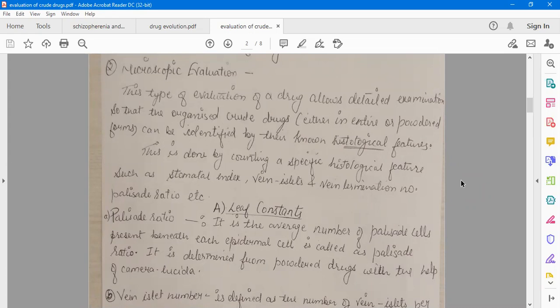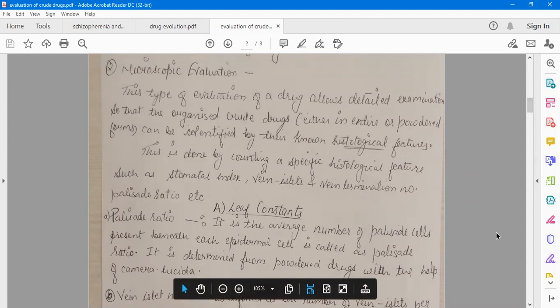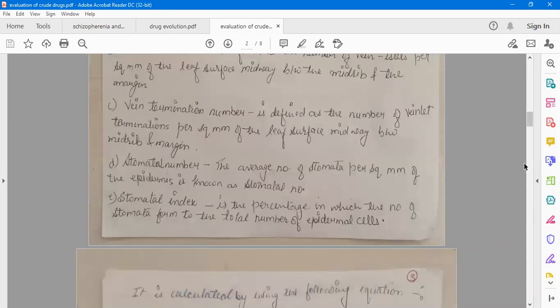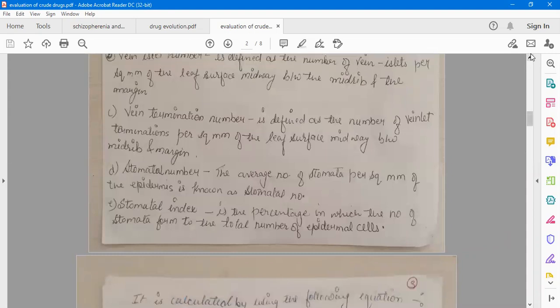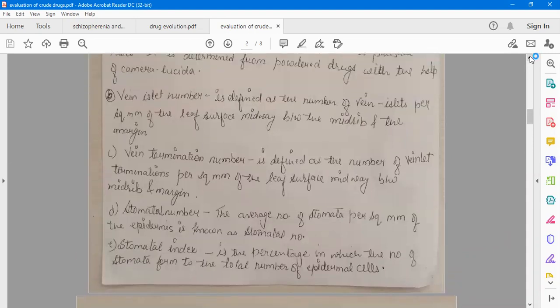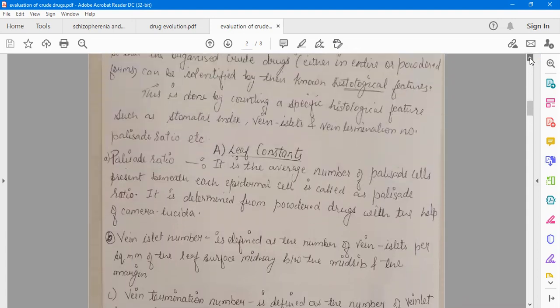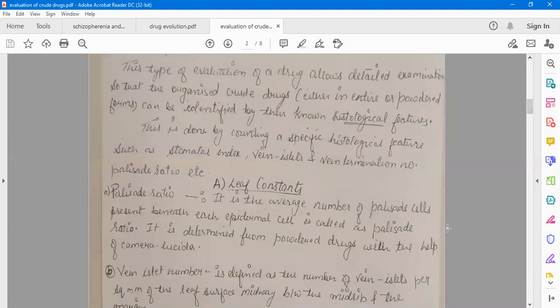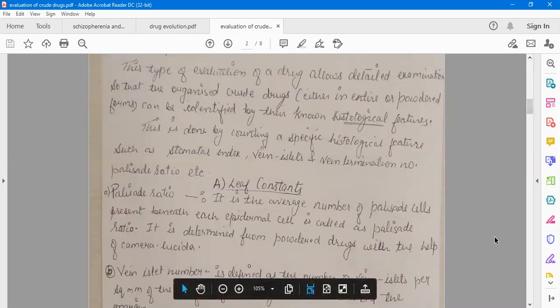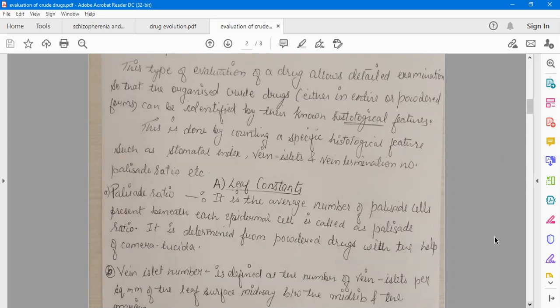Let us begin with microscopic evaluation. This type of evaluation of drug allows detailed examination so that organized crude drugs, either in entire or powdered form, can be identified by their known histological features.